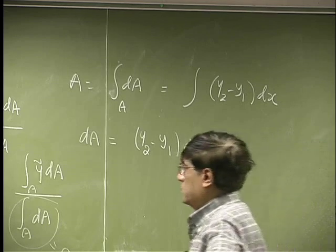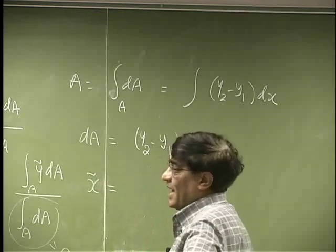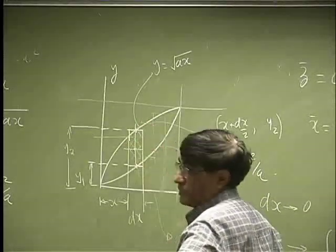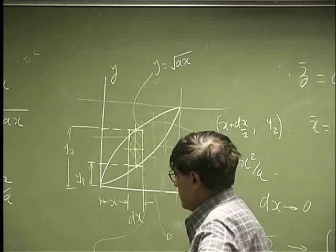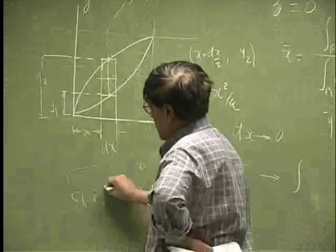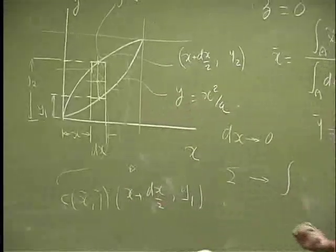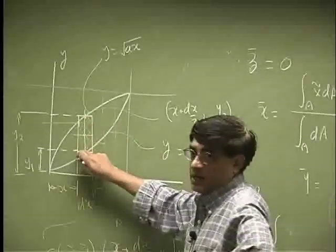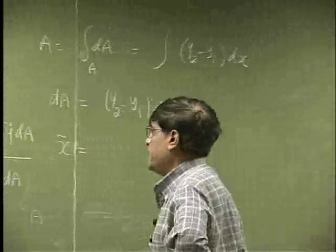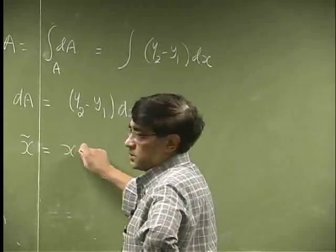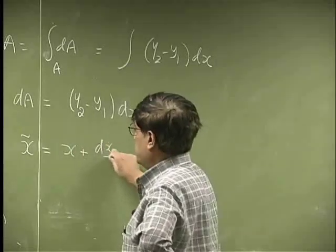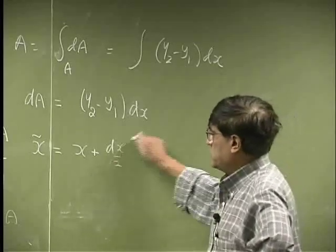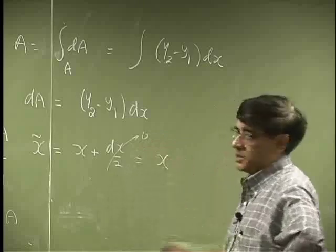Then we need the x tilde, the x-coordinate of the centroid of this rectangle. So if I use this as C, it's going to be x tilde and y tilde. The x tilde and y tilde are the centroid of this rectangle. So looking at the diagram, the x-coordinate is going to be x plus half of the width as dx over 2. So since we're taking dx as approaching 0, we drop this and I could take this as x.